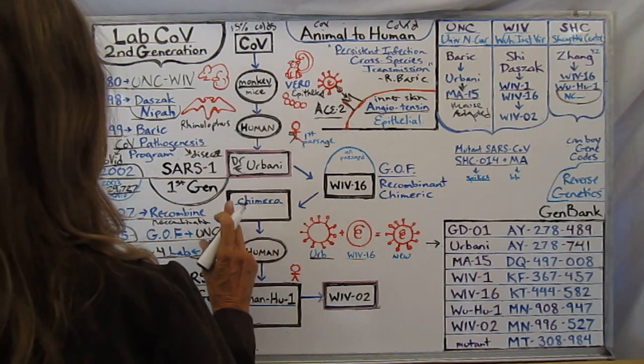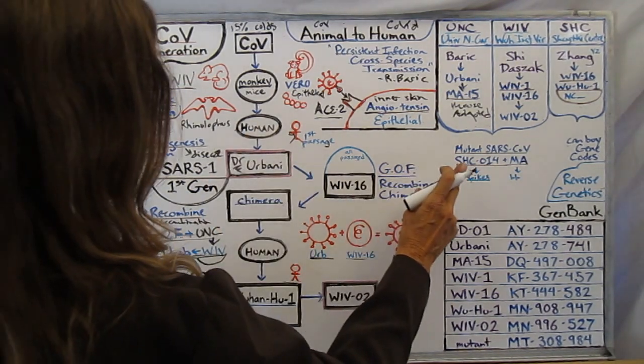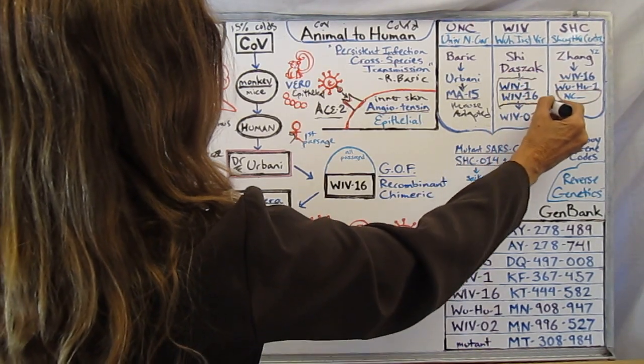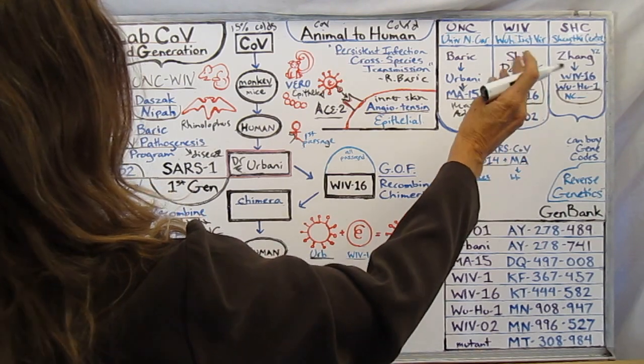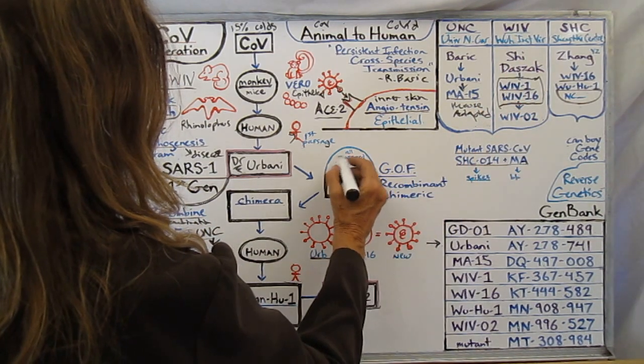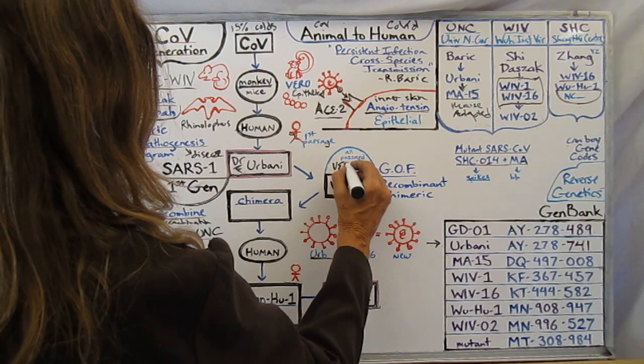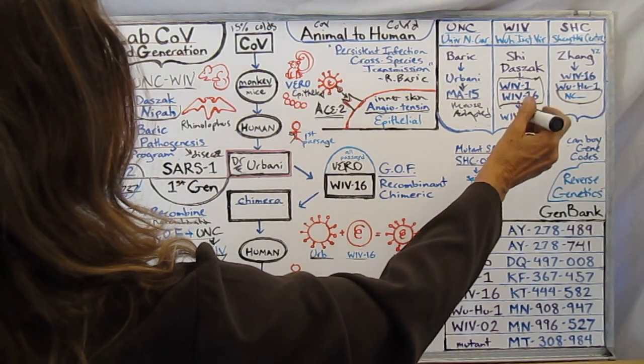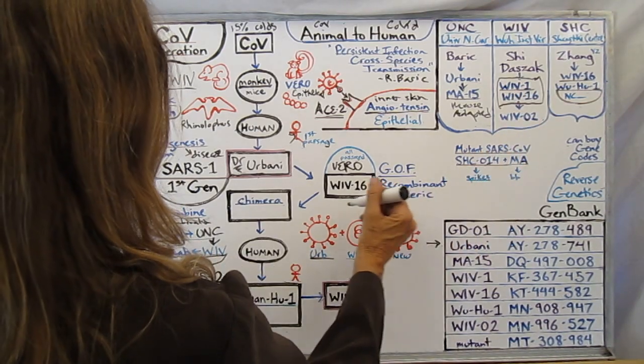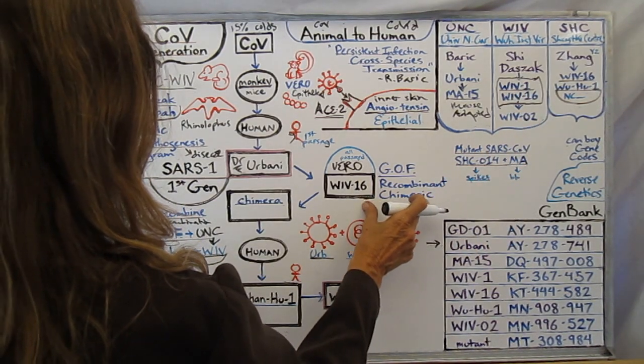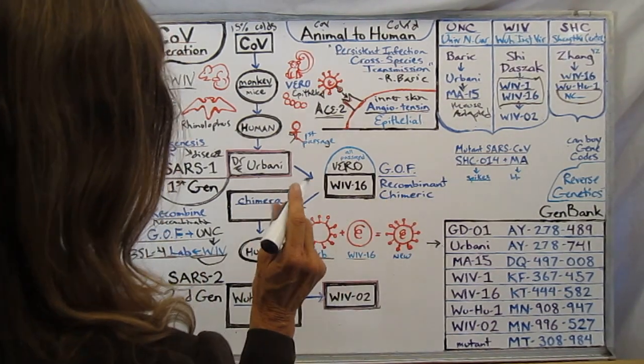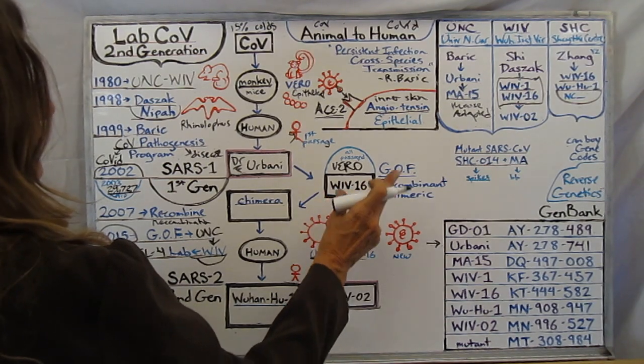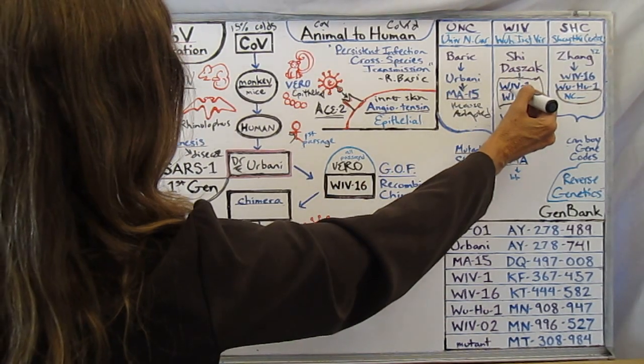And they're then continuing this work. Daszak and Shi are collecting lots of bat rhinolophus bat samples that contain very agreeable viruses. When they run them all, they're all passed through vero cells. Once they're all passed through these ACE2 receptor cells repeatedly, the really good behaving ones then become good candidates for their recombinant vaccines and viruses that they're building for these vaccines.